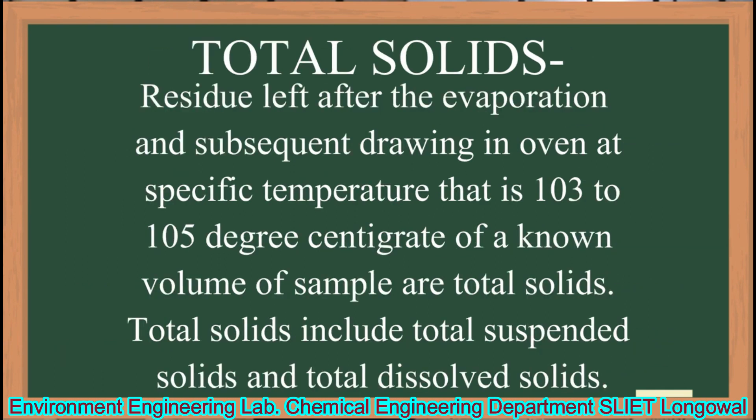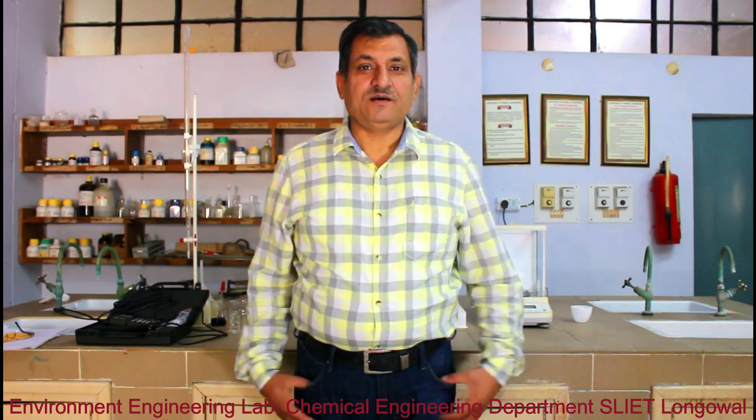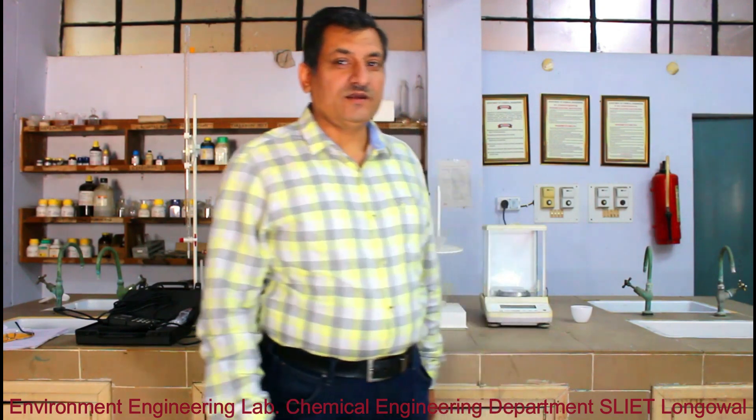And total solids — the residue left after evaporation and subsequent drying in an oven at a specific temperature, that is 103 to 105 degrees centigrade, of a normal volume of sample, are total solids. Total solids include total suspended solids and total dissolved solids. Let us begin the experiment in our laboratory.